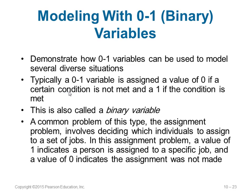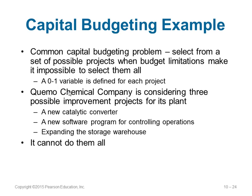The next type is 0-1 or binary integer programming. Here a value of 0 means a condition is not met and 1 means it is met. This is called a binary variable and is commonly used in assignment problems, where if you assign a job to an individual you give a value of 1, and if you do not assign it you give a value of 0.